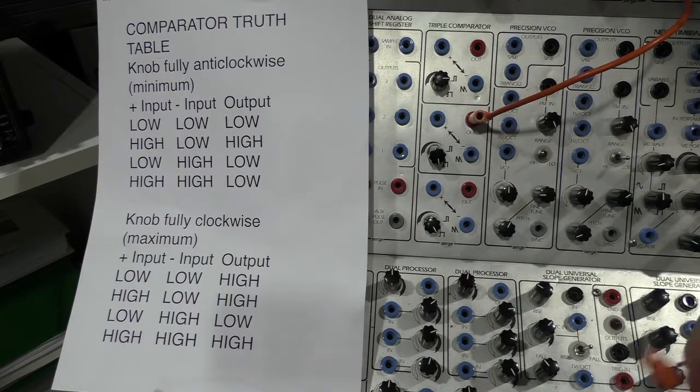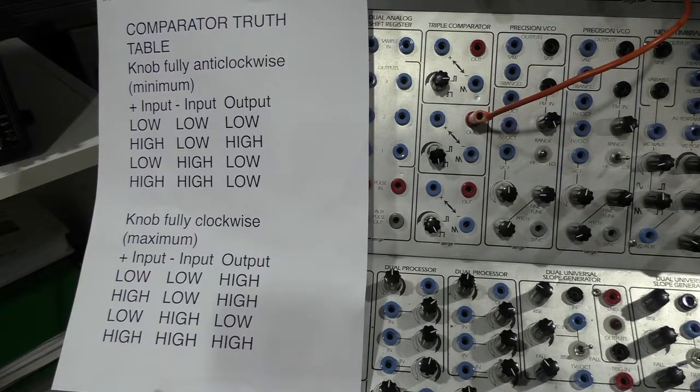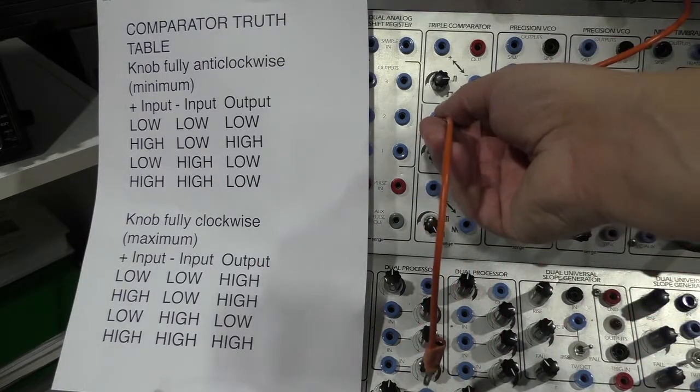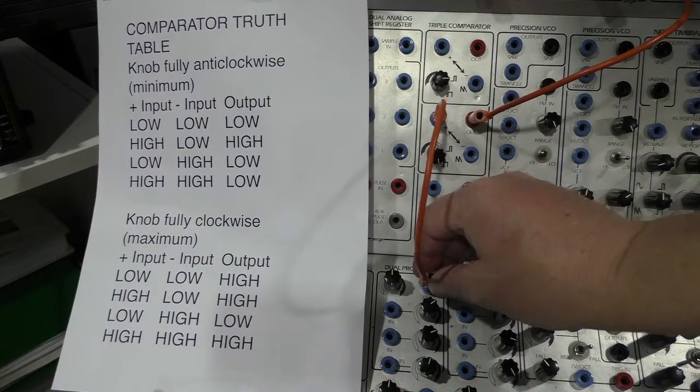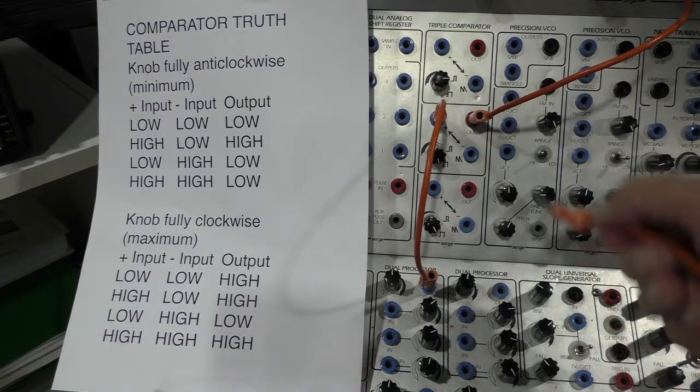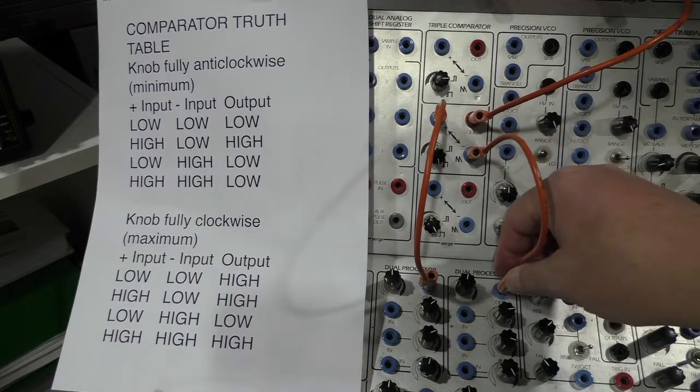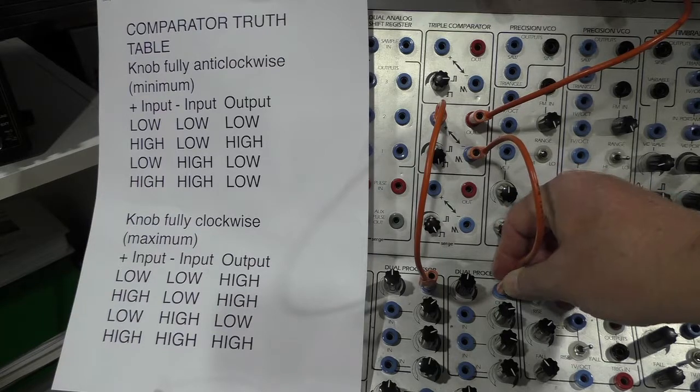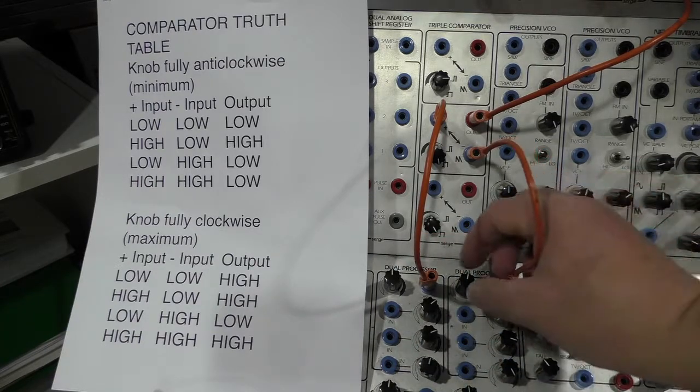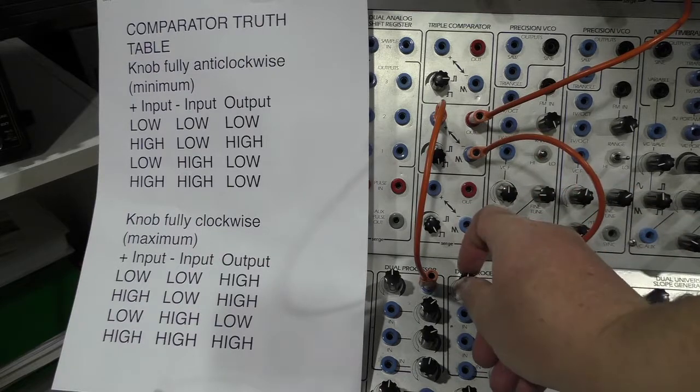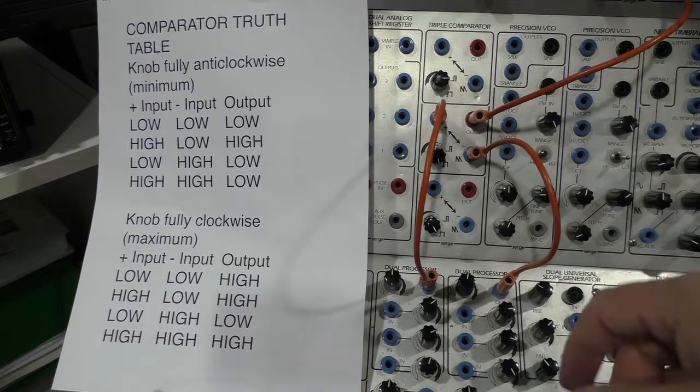So I'm now going to show, using this truth table here on the left, how this comparator works with two inputs. A voltage input to the left-hand side, the positive side, a voltage input to the right-hand side, the negative side. I'm using two dual processors here in order to provide these on-off type signals, high-low signals.